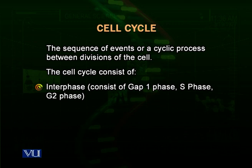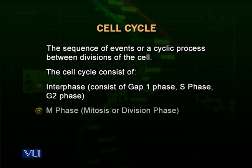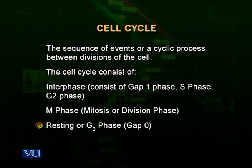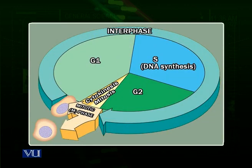Interphase consists of three sub-phases: G1 or GAP1, S phase or the synthesis phase, and G2 or the GAP2 phase. After the interphase, the next phase is the M phase — the mitosis or division phase. Interphase is a preparatory phase for the M phase, as the cell needs to prepare itself for division. As shown in the diagram, interphase makes up about 80 to 90% of the cell cycle.